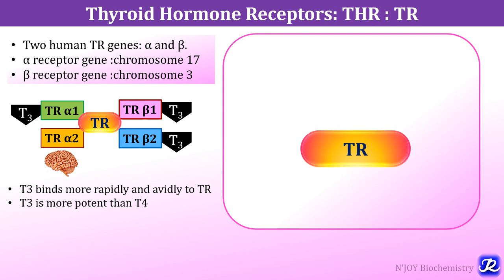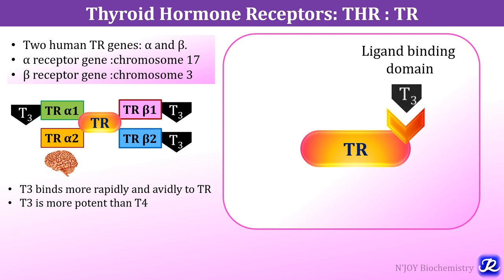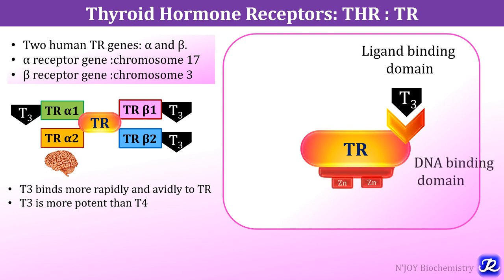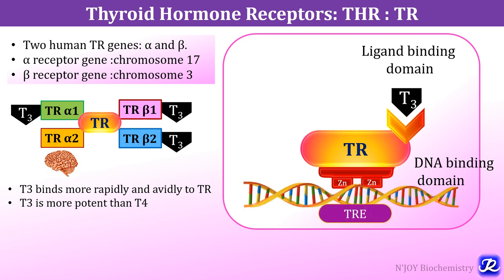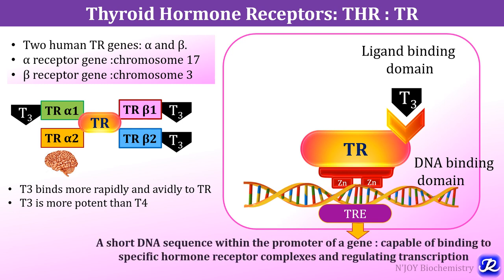The thyroid hormone receptor TR has a ligand binding domain where the thyroid hormone binds. It also has a DNA binding domain with two zinc finger motifs, and with the help of this DNA binding domain it binds to the thyroid response element — the hormone response element present on the DNA. It is a short DNA sequence within the promoter of a gene capable of binding to specific hormone receptor complexes and regulating transcription.